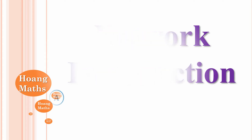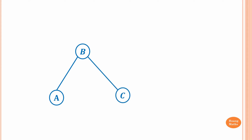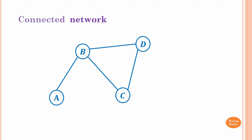Let's say there is a town A that connects to town B, and B connects to C. We have town D connecting to B and C. This is called a network — in fact, this is a connected network because all towns are connected together.